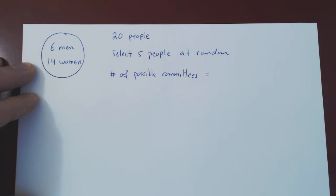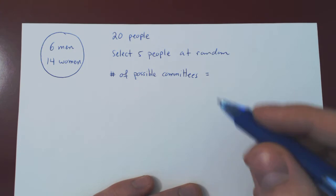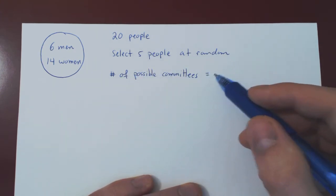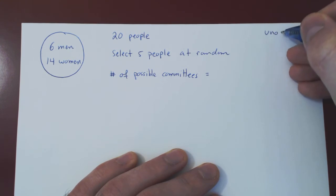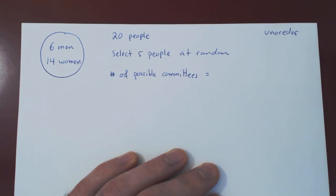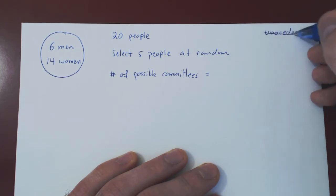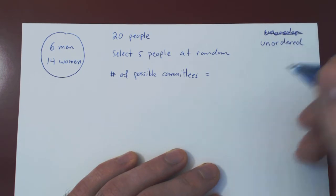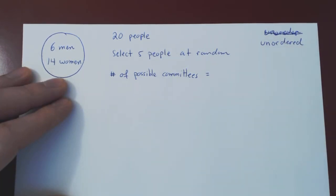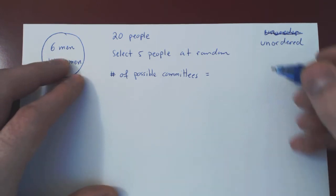Every time you have a counting problem, you should always ask yourself two questions. First: is the setup ordered or unordered? Second: is it with or without replacement? Clearly, we're forming a committee of five people, so we don't care about the order of the selection — we just want to know who the five people are. So it is unordered. And it is clearly without replacement — you can't have one person serving as two people on the committee. So it is without replacement.